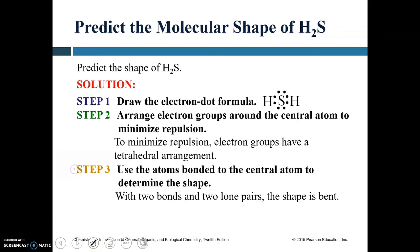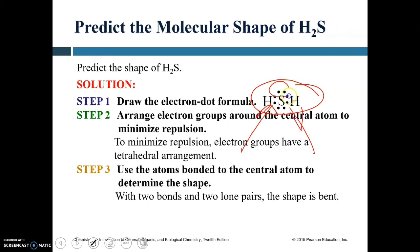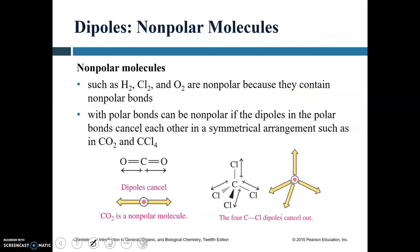Predicting shapes with VSEPR: hydrogen sulfide has two bonds and two lone pairs — tetrahedral electron geometry, but bent molecular shape. Non-polar molecules such as H₂, Cl₂, or O₂ have non-polar bonds, are linear or symmetric, and have no polarity. Molecules with polar bonds can still be non-polar if the dipoles cancel due to symmetrical arrangement — for example, CO₂ is linear and its two dipoles cancel each other.